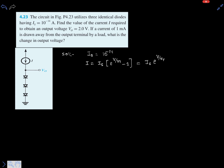It is given that Vout is 2 volts. Vout is nothing but 3 times Vd, so Vd equals 2 divided by 3 volts, which equals 0.667 volts.